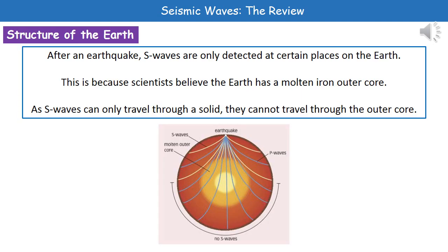One of the things that earthquakes has given us is a greater understanding of the actual structure of the Earth. After an earthquake we only detect S waves at certain places on the Earth's surface. Scientists believe the Earth has a molten iron outer core. Looking at the diagram, the source of the earthquake is at the top, sending out both S waves and P waves. P waves travel through solids and liquids, so they can be detected all over the surface of the Earth.